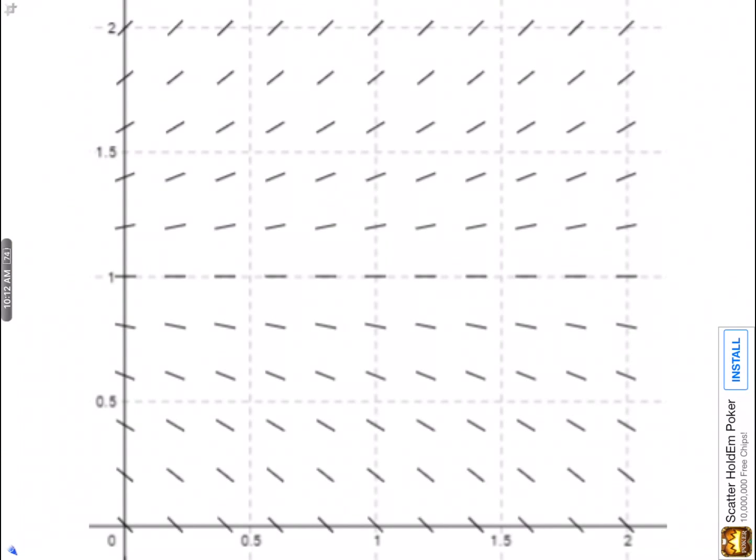As an example, here is the direction field for y prime of x equal to y minus 1. So the idea is basically you can see at this one line we have a constant solution.